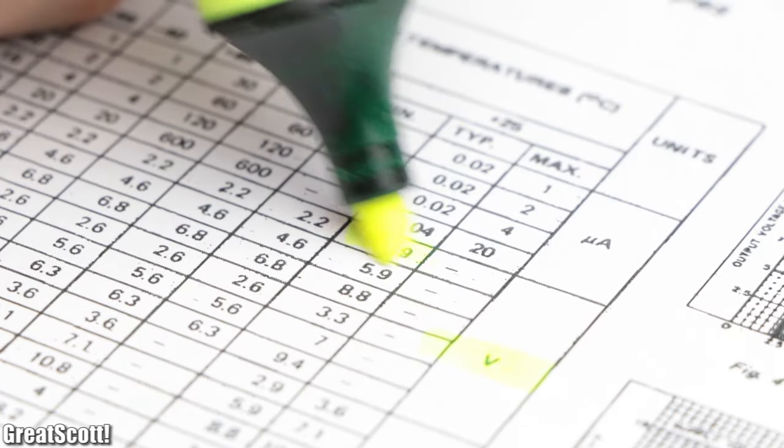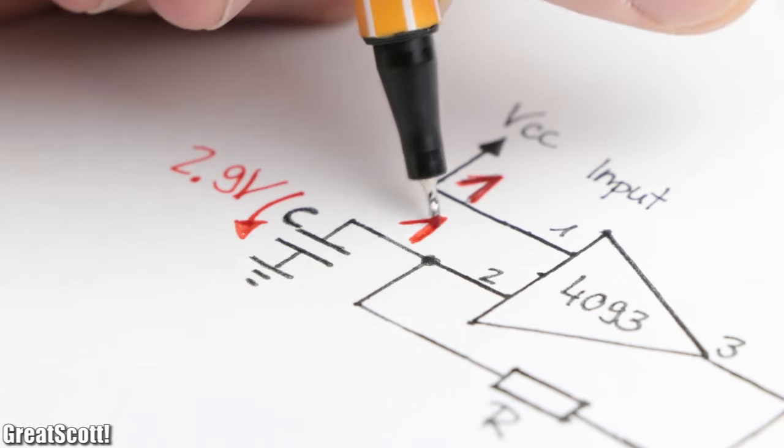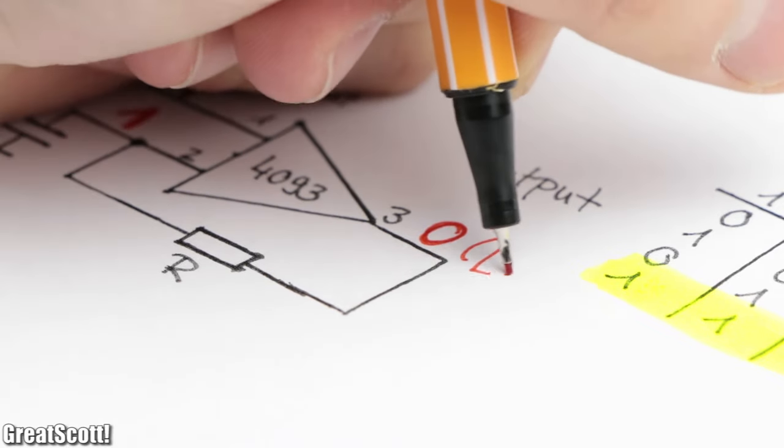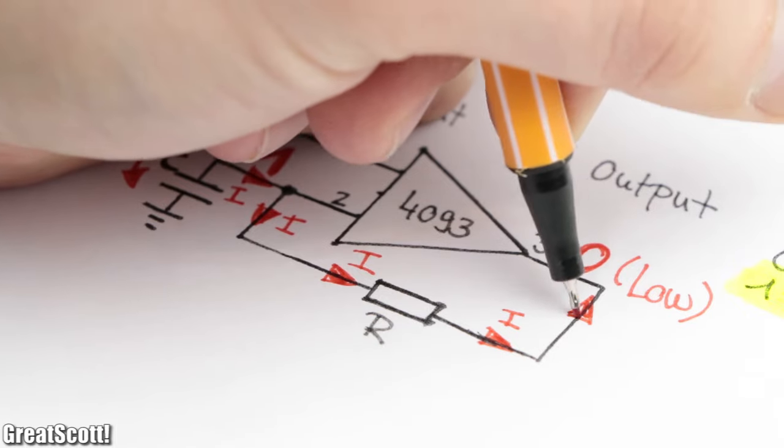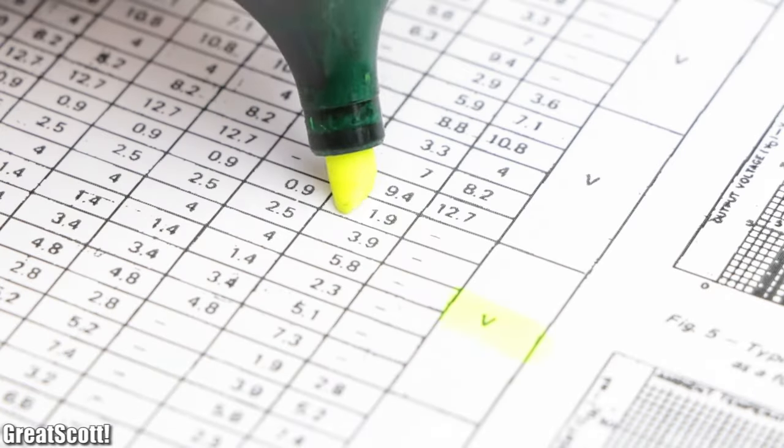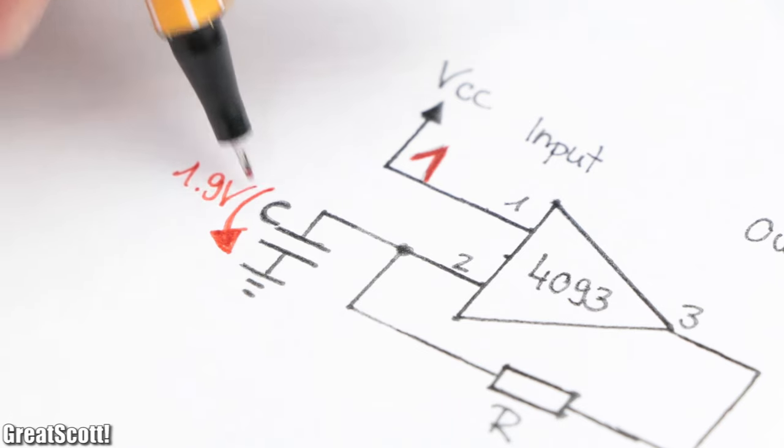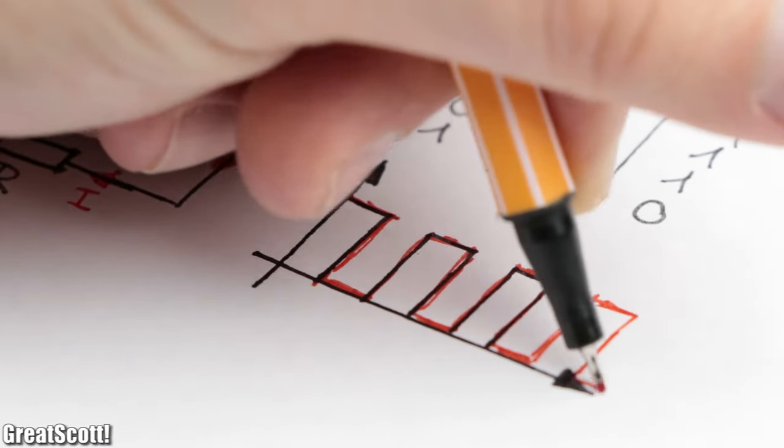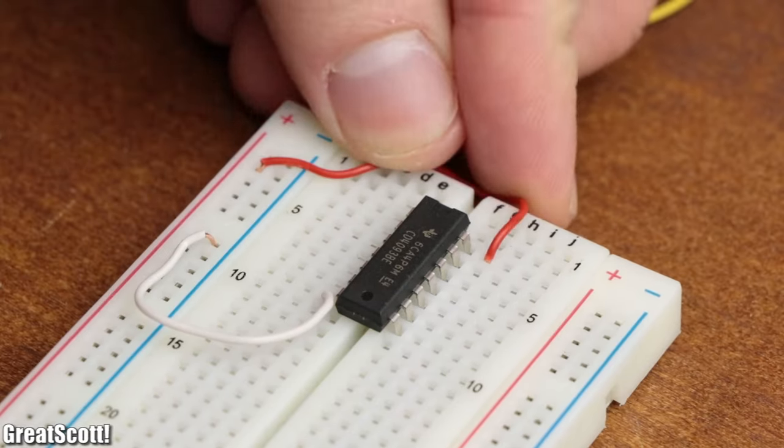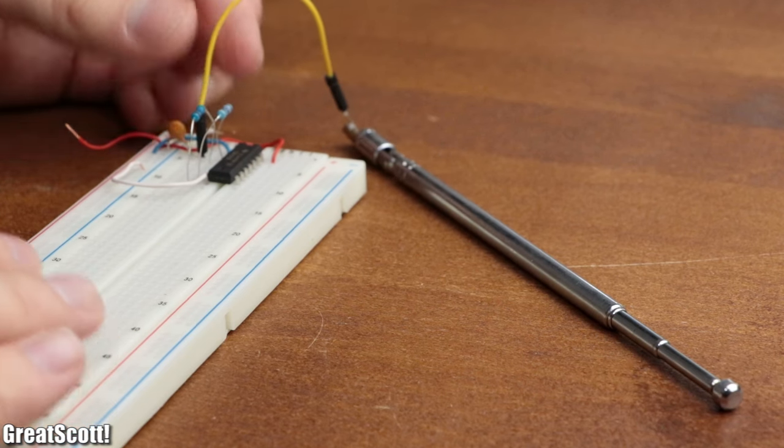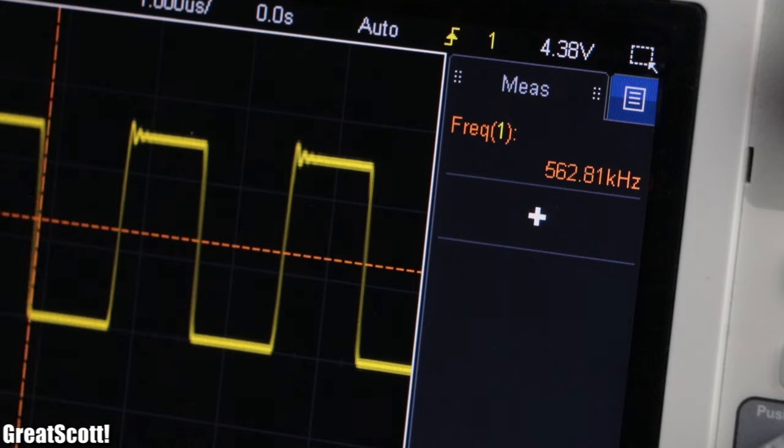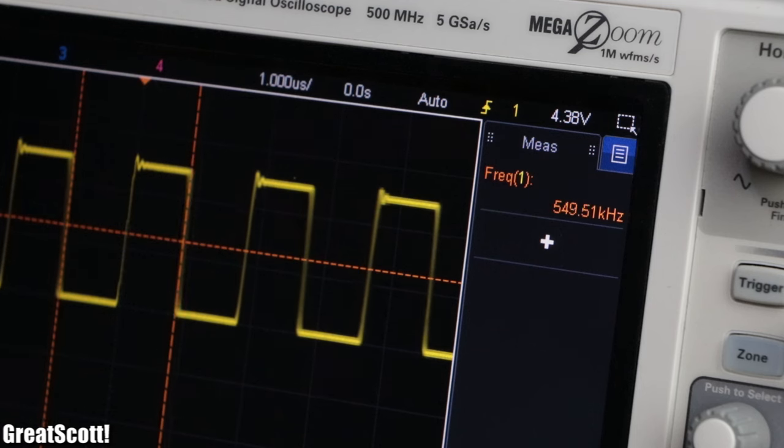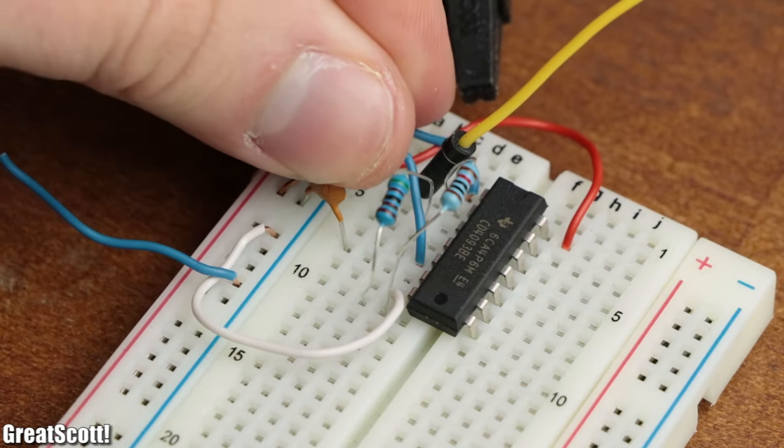Once the capacitor reaches the low threshold value of 1.9 volts, the input is once again low and thus the cycle starts over again and creates a square wave signal on the output. If we would build up the antenna oscillator on a breadboard with the previously shown component values, we would get a frequency of around 565 kilohertz, which gets altered by my body capacitance through the antenna by around 10 kilohertz. The second 4093 oscillator is utilized to create a reference oscillation frequency.